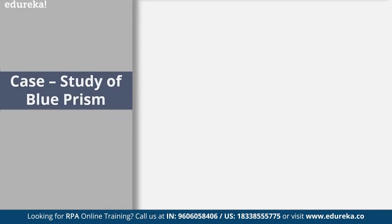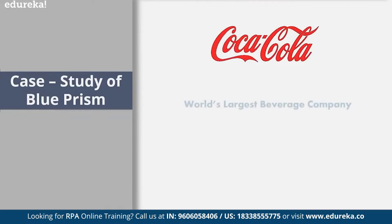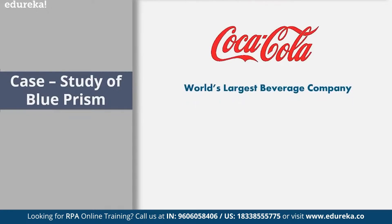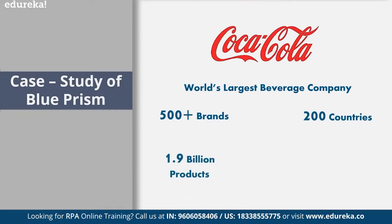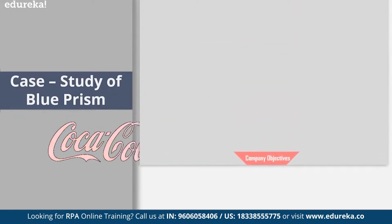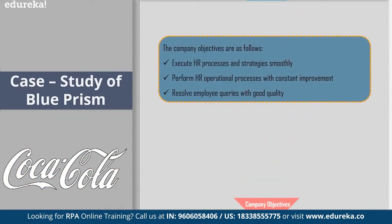Moving on to the case study of Blue Prism — I'm going to show you how a company benefited by using Blue Prism. The company is Coca-Cola. Coca-Cola is one of the world's largest beverage companies with more than 500 brands in 200 countries, with 1.9 billion products consumed by 200 million customers daily. The company's objectives were mainly to execute HR processes and strategies smoothly, perform HR operational processes with constant improvement, and resolve employee queries with good quality.